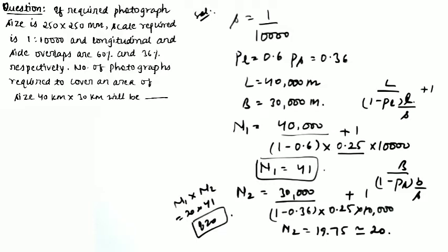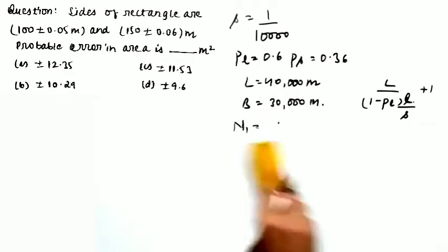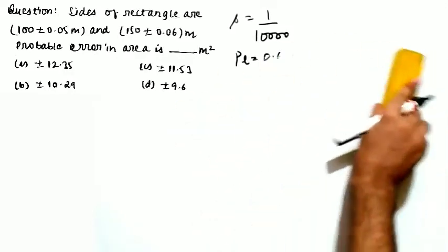So 820 is the number of photographs required in the photogrammetric survey to cover this area. Now moving to the next question, which is related to errors.